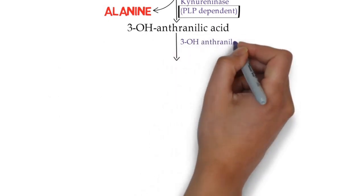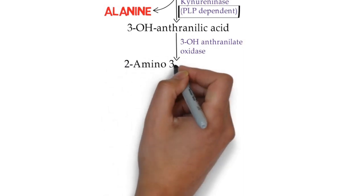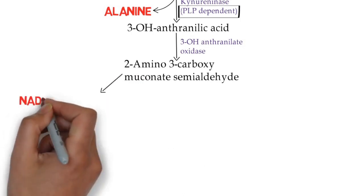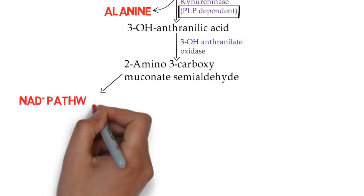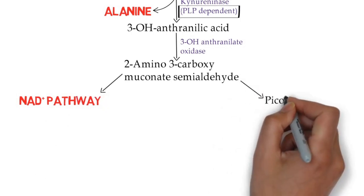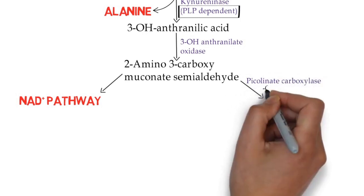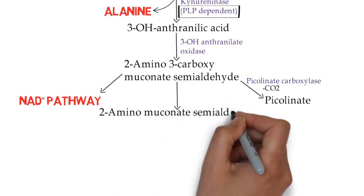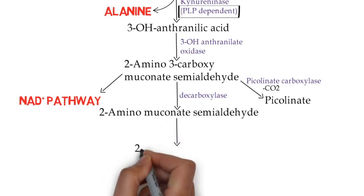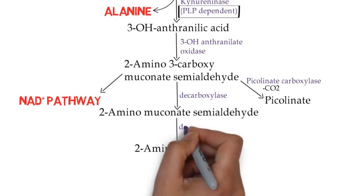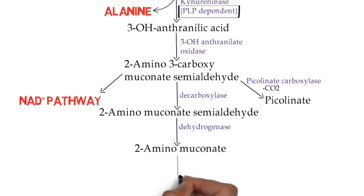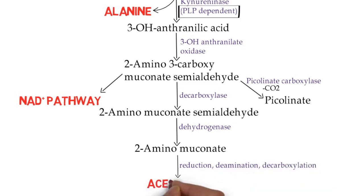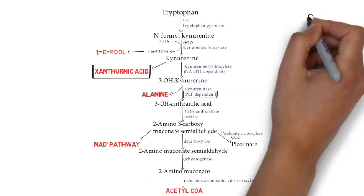3-hydroxy anthranilic acid is cleaved by 3-hydroxy anthranilate oxidase to form 2-amino-3-carboxymuconate semialdehyde. This compound has three fates: first, the vitamin niacin and NAD formation pathway; second, formation of picolinate by decarboxylation by picolinate carboxylase; and third, formation of 2-aminomuconate semialdehyde by decarboxylation. This is then converted to 2-aminomuconate by dehydrogenase.